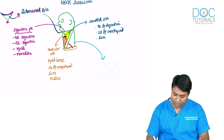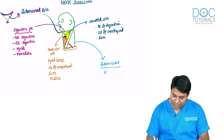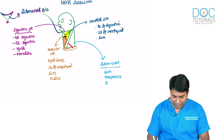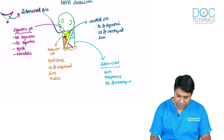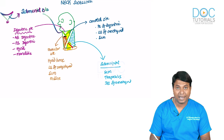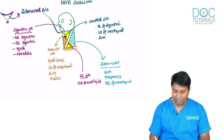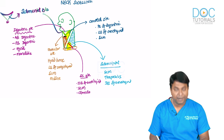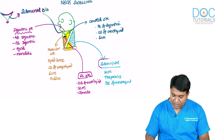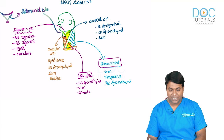Coming to the posterior triangles, there are two. One is the sub-occipital triangle, bounded by sternocleidomastoid, trapezius, and the inferior belly of omohyoid. The other is the supra-clavicular triangle, bounded by the inferior belly of omohyoid, sternocleidomastoid, and clavicle.